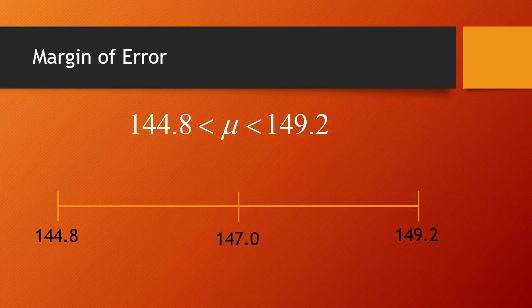Notice that our sample mean is right in the middle, as it always will be when we construct a confidence interval for the mean. The distance between our sample mean and the lower boundary of the interval is 2.2. We expect the same distance to both edges since 147 is in the middle. This 2.2 is referred to as the margin of error.